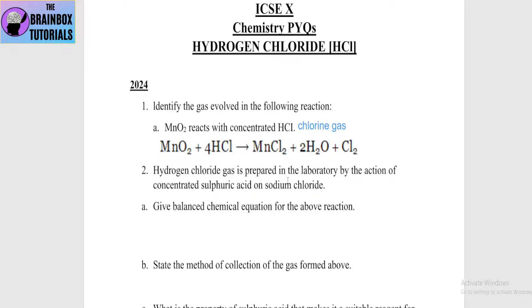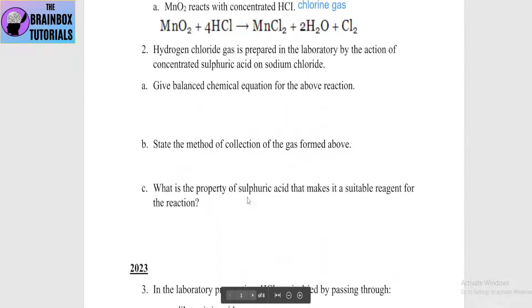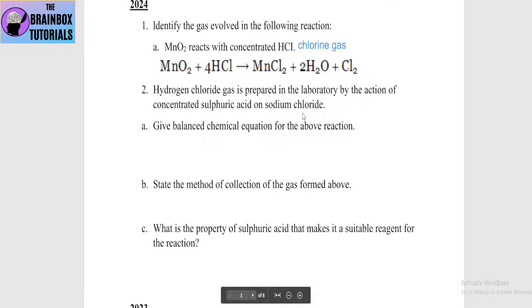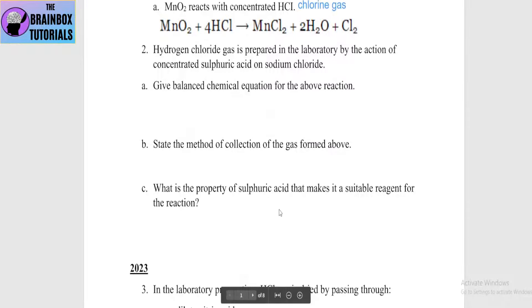The next question is: hydrogen chloride gas is prepared in the laboratory by the action of concentrated sulfuric acid on sodium chloride. Give the balanced chemical equation for the above reaction. State the method of collection of the gas formed. And third: what is the property of sulfuric acid that makes it a suitable reagent for this reaction? Let's write all the answers.